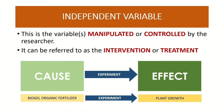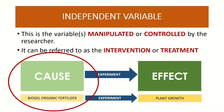In that context, the variable that is manipulated or controlled by the researcher is what we call the independent variable. It can also be referred to as the intervention or treatment. The independent variable is the variable that the researcher will use, control, or manipulate to see the effect or change on another variable. In our example, the independent variable is the biogel organic fertilizer, since that is what the researcher wants to manipulate to see if there is any change in plant growth.